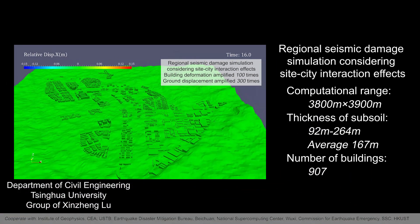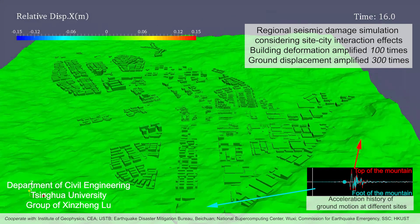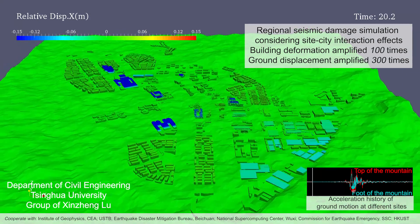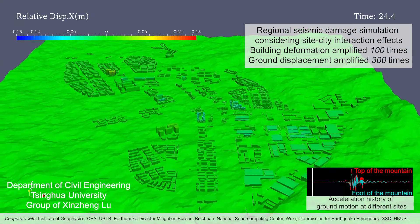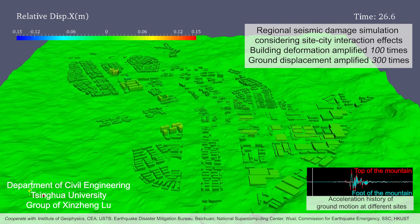Specifically, the buildings are simulated using the nonlinear multiple-degree-of-freedom models, and the site is simulated using the 3D spectral elements. The ground motions of the Wenchuan earthquake are simulated using the Sunway Taihu Light supercomputer. Subsequently, the ground motions are adopted to simulate the interactive seismic responses of both the buildings and the site of the entire new Beichuan city.